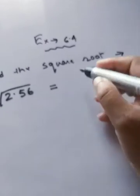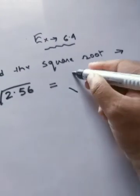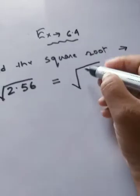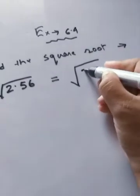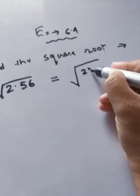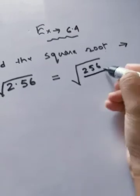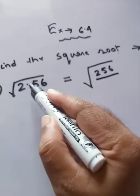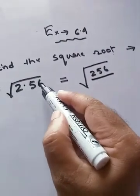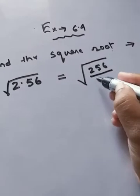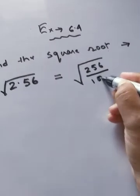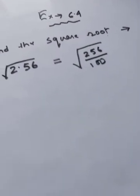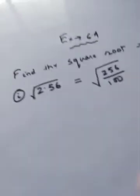The first thing you have to do is convert 2.56 into fractional form. The rule is to check how many digits are there after the decimal. There are two digits, so we'll put 100 in the place of the denominator.